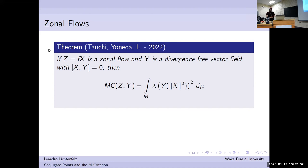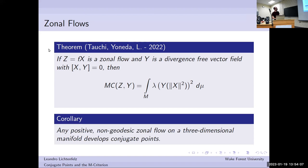As a corollary, on a 3D manifold you can actually localize this computation. It's always possible to choose vector fields Y that commute with X and only see the positive part of lambda, vanishing elsewhere. This gives as a corollary that any positive non-geodesic zonal flow on a 3D manifold develops conjugate points — with the usual addendum in 3D that this holds if they exist long enough.